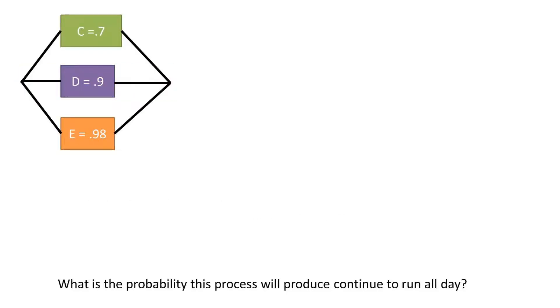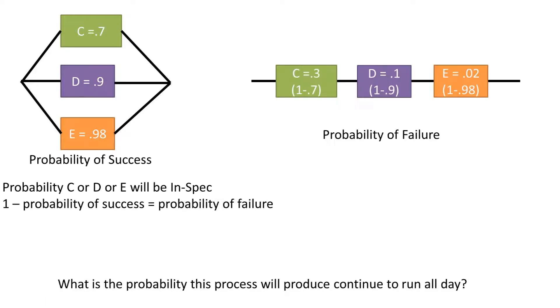Now to move on to the parallel subprocess. The way I like to do these is to transform the process into a series process by determining the probability of failure. We can take 1 minus the probability of success to get the probability of failure. Doing so, we are left with the following values that can now be placed in series.